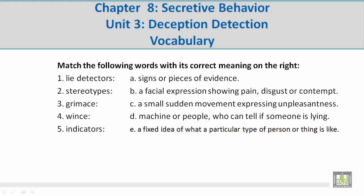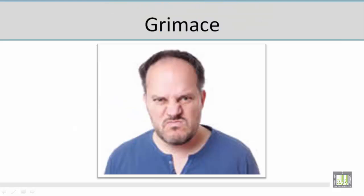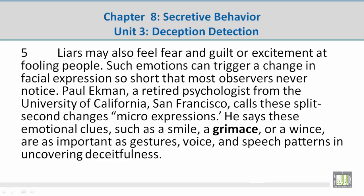Number 3: Grimace. B — a facial expression showing pain, disgust, or contempt. Let's take a look at a picture related to the vocabulary word 'grimace.' Mohamed, could you please talk about this? This guy in the picture is showing an angry facial expression — grimace meaning showing pain, disgust, or contempt. The sentence reads: he says these emotional clues such as a smile, a grimace, or a wince are as important as gestures.